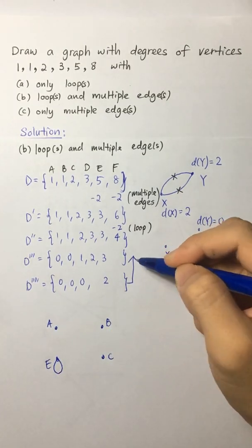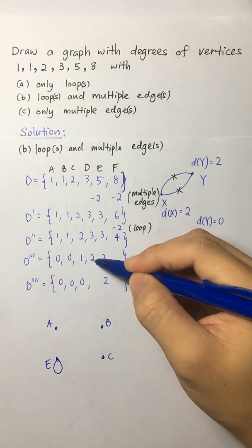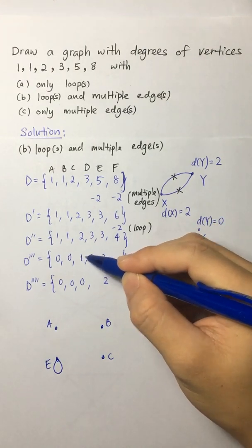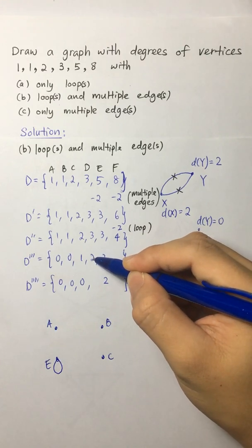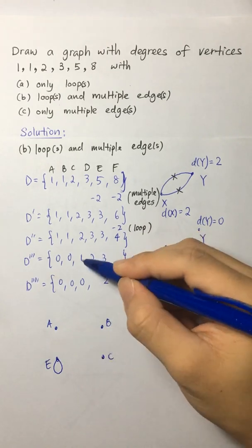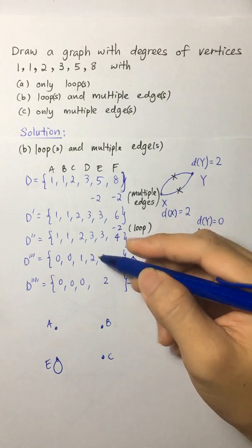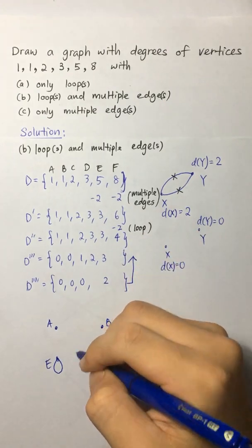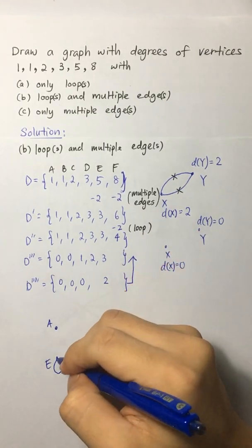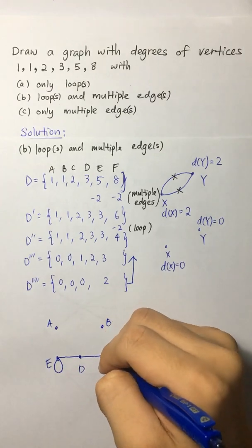Okay, we reverse the process by adding back D. D is actually connecting to C and E. So when we add the vertex E back to the graph, we have to add the corresponding edges. So we add D here. And we connect it with C and E.